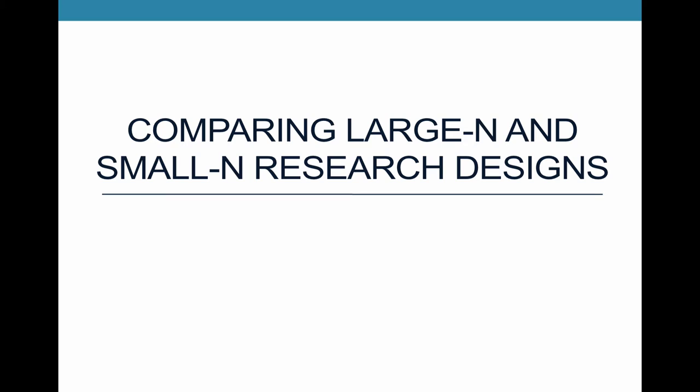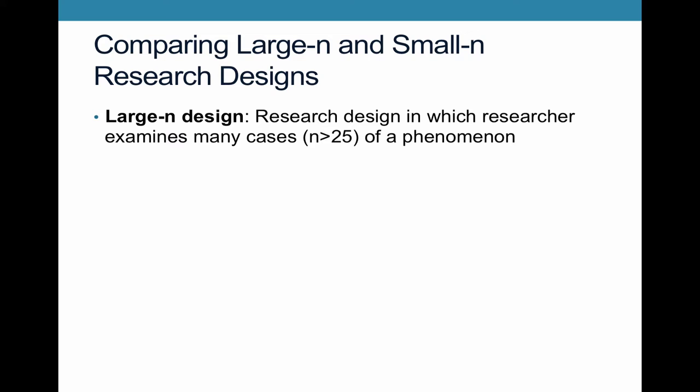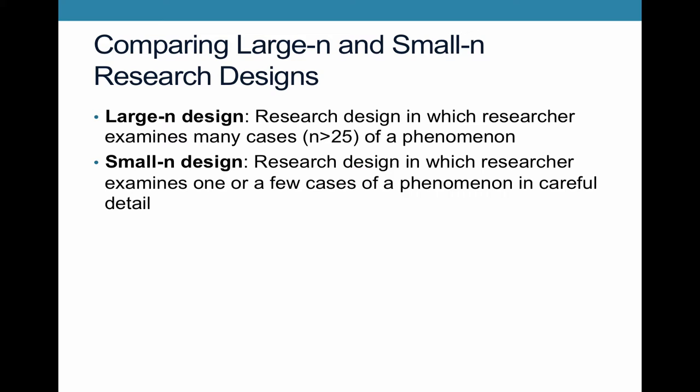So what are large n and small n research designs? A large n design is one in which the researcher is comparing lots of cases — an n of larger than 25 of a certain phenomenon. Here you want to have more cases the better, so you want your sample size to be as large as you possibly can have it. For a small n study you're saying let's just look at one or a couple of cases and focus on these cases in great detail, really picking apart one or just a handful of cases.